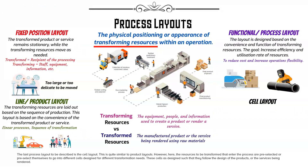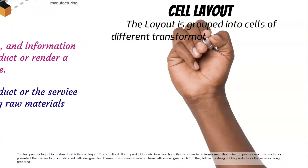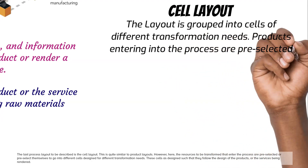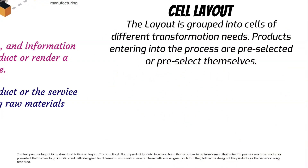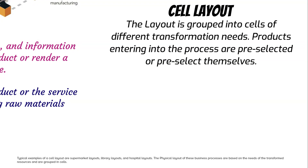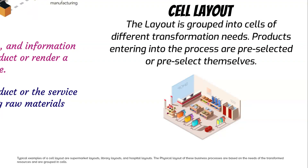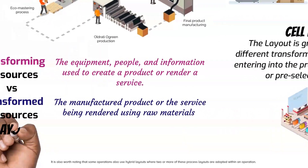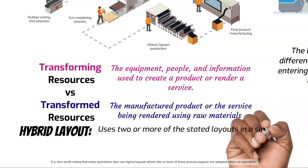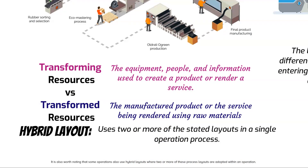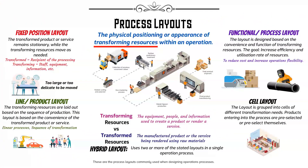The last process layout to be described is the cell layout. This is quite similar to product layouts. However, the resources to be transformed that enter the process are preselected or preselect themselves to go into different cells designed for different transformation needs. These cells are designed such that they follow the design of the products or the services being rendered. Typical examples of a cell layout are supermarket layouts, library layouts, and hospital layouts. It is also worth noting that some operations use hybrid layouts where two or more of these process layouts are adopted within an operation.